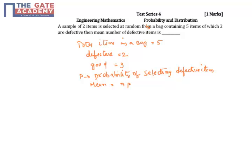How do you find out P? P is the probability of selecting a defective item. How many total items are there? 5. How many defective items? 2. So, P is nothing but 2 by 5.